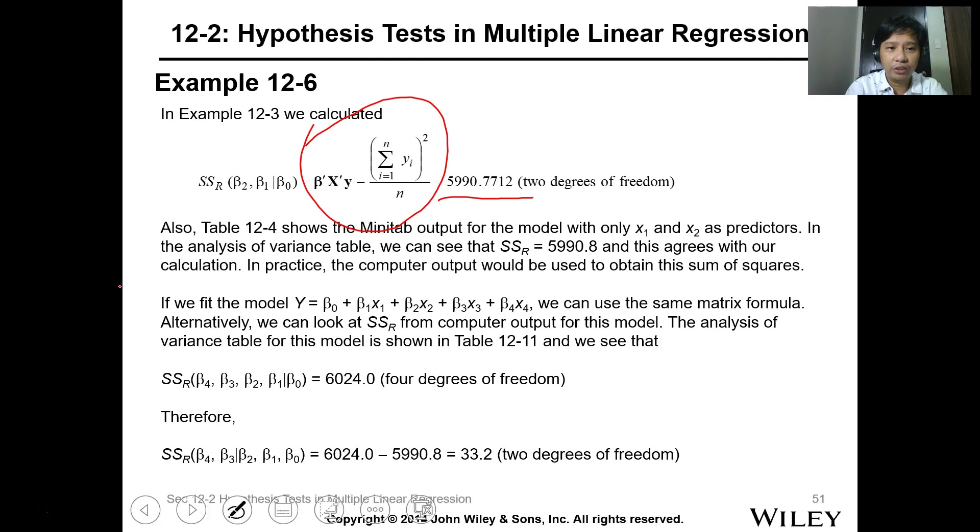So two degrees of freedom. And in the table, there it is in Table 12-4, the SSR which is 5990. If we fit the model - this is the new one because there are four variables now - we can use the same matrix formula.